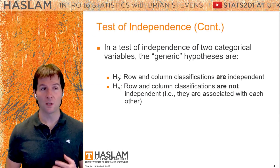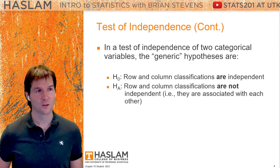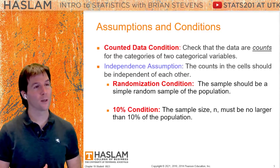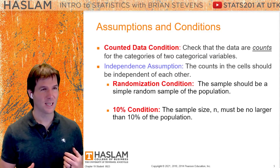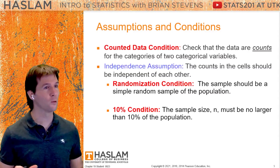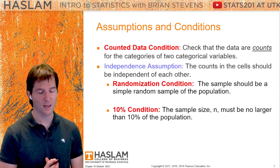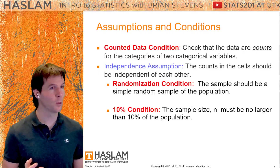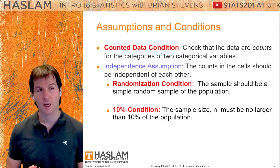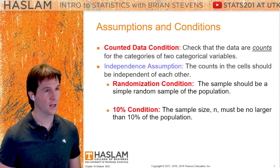Before doing any of this, we need to know if we are able to do this — we need to check our conditions. Condition one is random: we need to randomly collect this data. If the Titanic is a random collection of passengers, sure, maybe we pass that. Less than 10% of all people who would go on cruises — sure, maybe we pass that too. These are the first two conditions we use for all tests and intervals in this class.